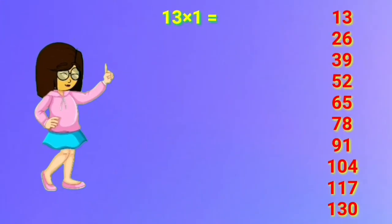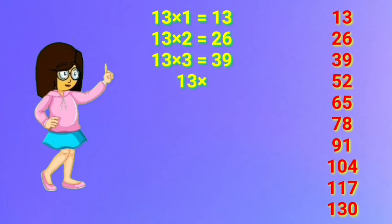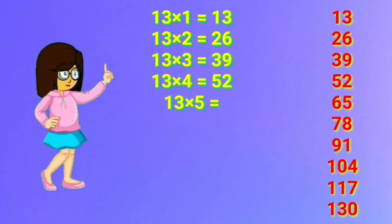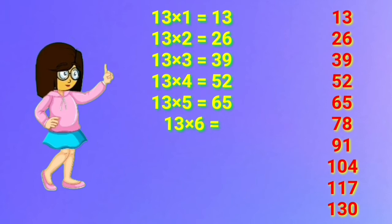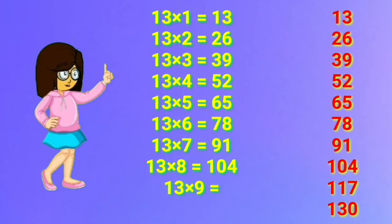13 one's are 13. 13 two's are 26. 13 three's are 39. 13 four's are 52. 13 five's are 65. 13 six's are 78. 13 seven's are 91. 13 eight's are 104. 13 nine's are 117. 13 ten's are 130.